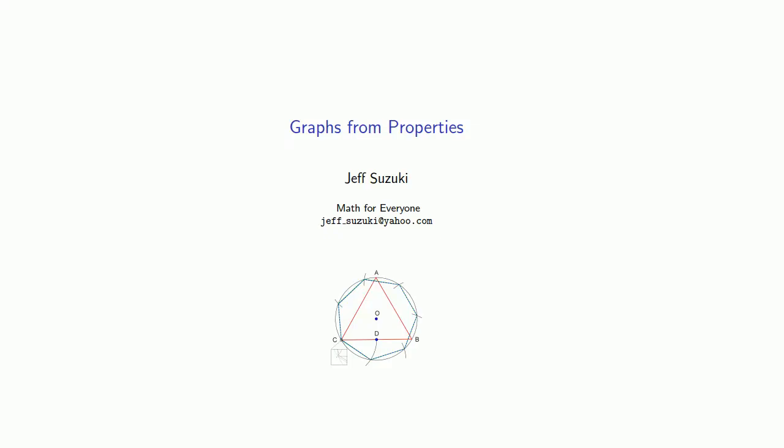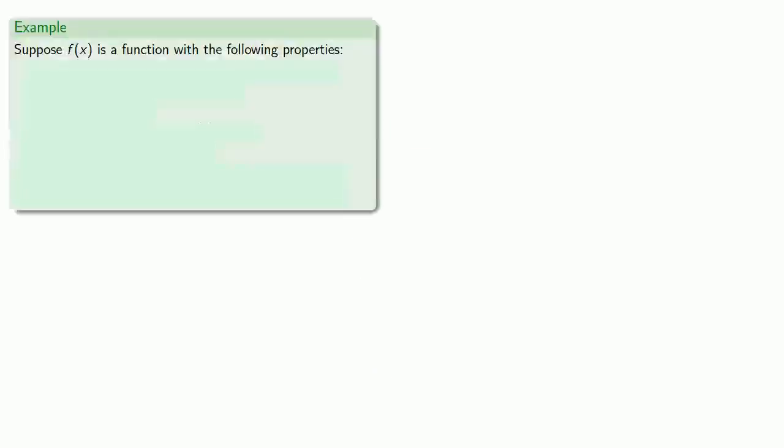Let's put some of our ideas together and see what we can determine about a graph from the properties of a function. Suppose f of x is a function with all of the following properties.